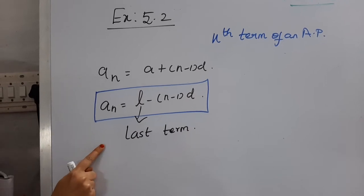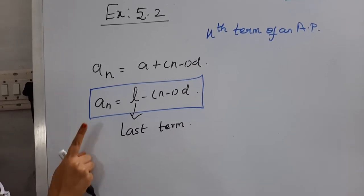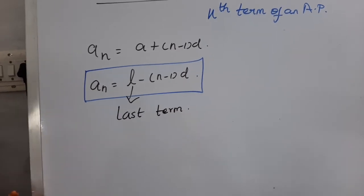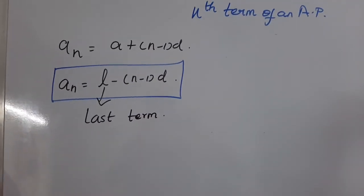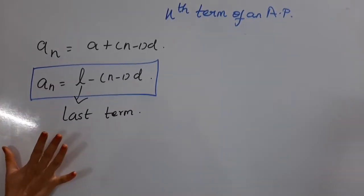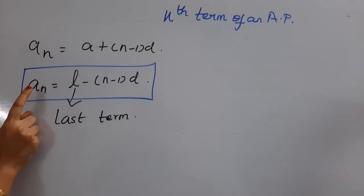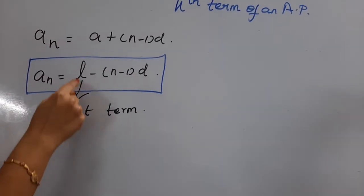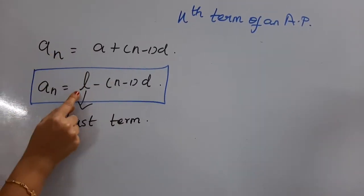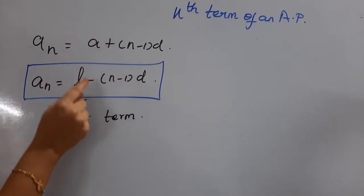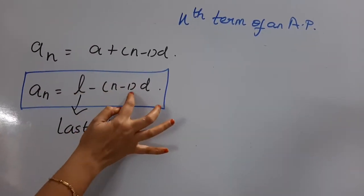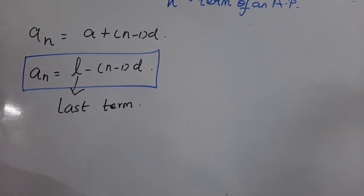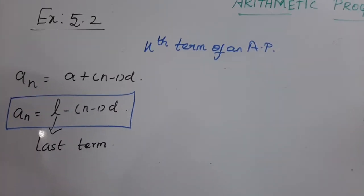If a finite AP is given and they ask you to find the 10th term from the last, or the 5th term from the last, or the 6th term from the end, we will use the AN formula from the last. Copy this formula in your content book if you haven't already. To find a term from the last: AN = L − (N−1) × D. Instead of the first term, we use the last term, and instead of plus, we use minus.